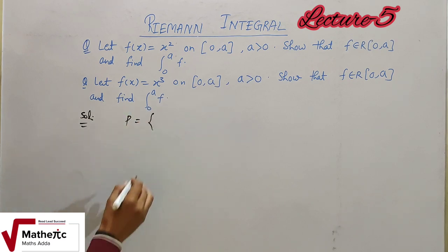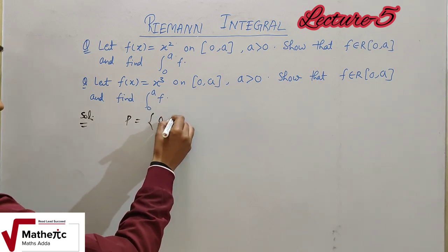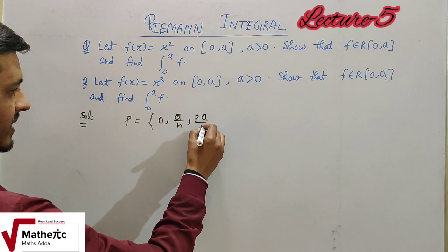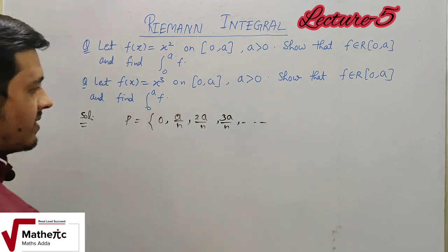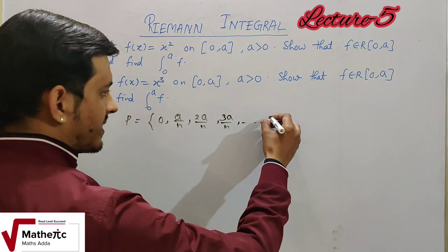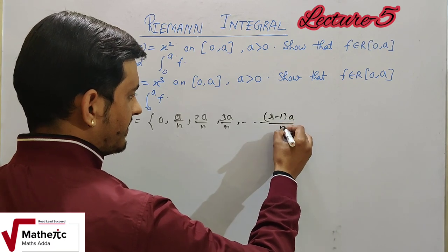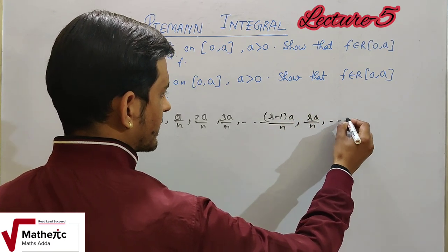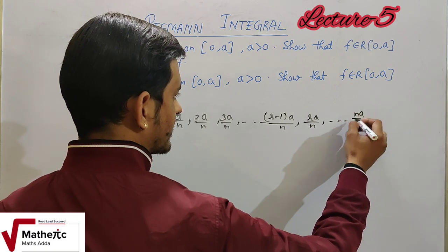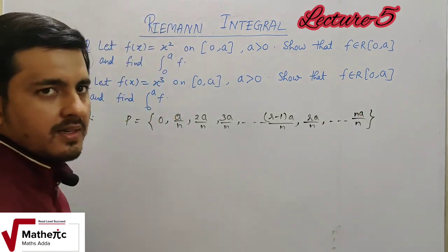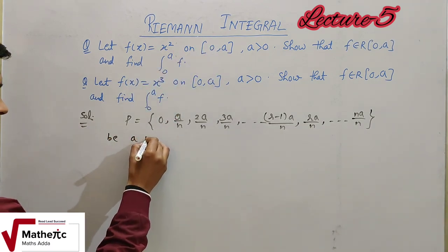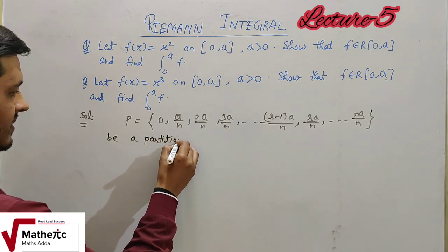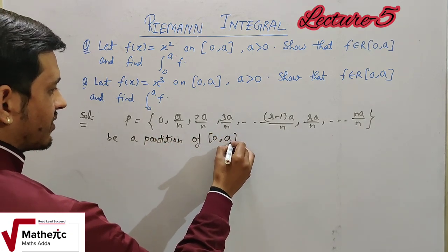The partition P = {0, A/N, 2A/N, 3A/N, ..., (r−1)A/N, rA/N, ..., NA/N} — use this same partition for the second question as well. Note that NA/N cancels to give A, which is the highest value. This is a partition of the closed interval [0, A].